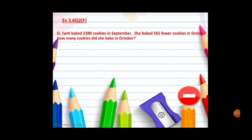For this I am taking one question from the exercise only. The question is, Jyoti baked 2380 cookies in September. She baked 565 fewer cookies in October. How many cookies did she bake in October? For this very first, write down the solution. Read the word problem at least two times. See the number and read the words around the number. See the first number 2380, what is written around this number? Baked cookies in September. So the very first statement will be number of cookies baked in September is equal to 2380.